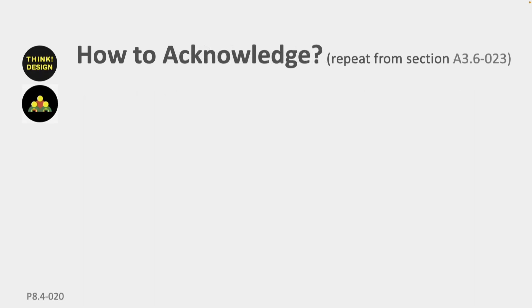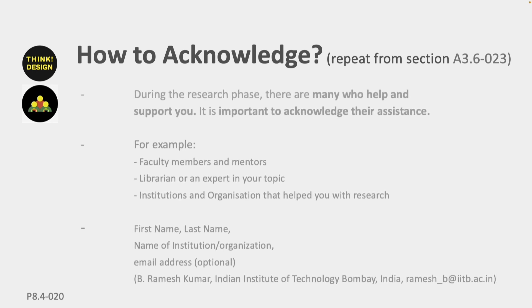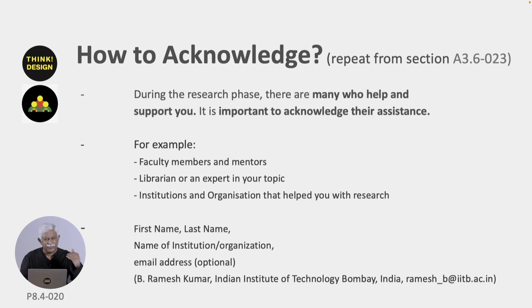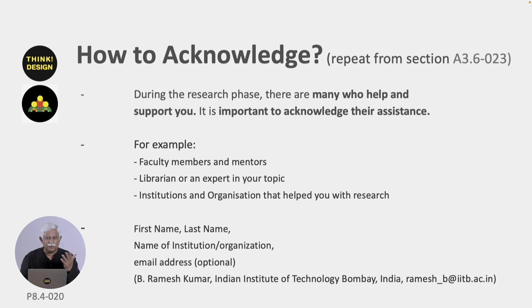Let us look at how to do acknowledgments — also repeated from section A3. During your research and analysis, you might have taken help from many people, so it is very important that you acknowledge their assistance. For example, it could be faculty members and mentors, a librarian, an expert in your topic, or an institution or organization that helped with your research. You need to include first name, last name, name of the institution or organization, and optionally an email address.